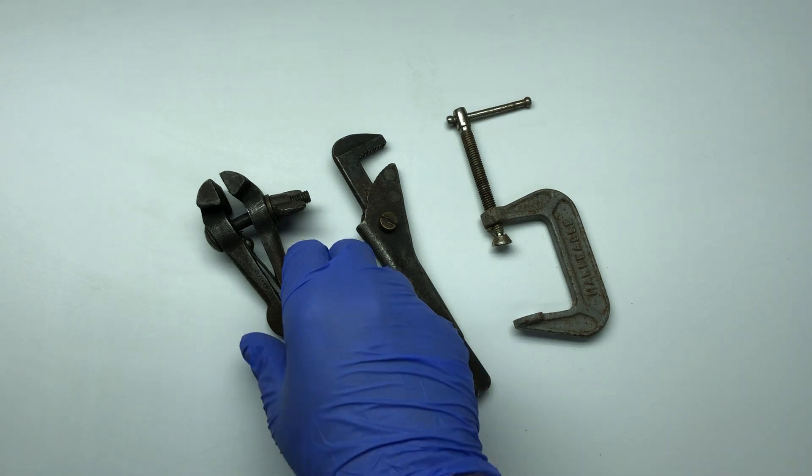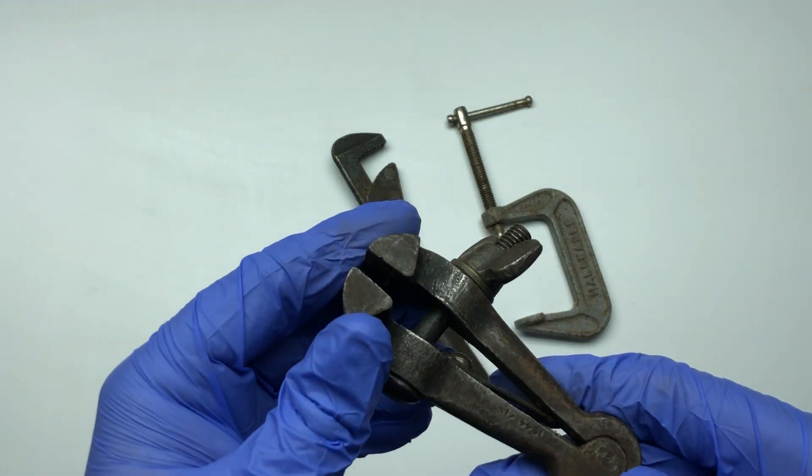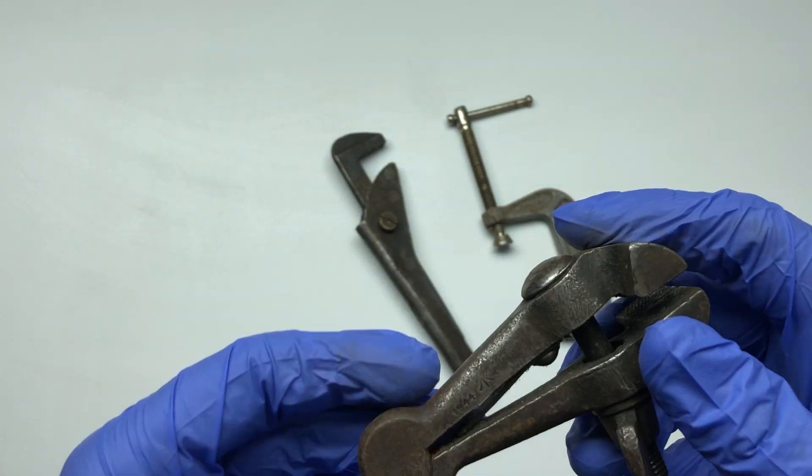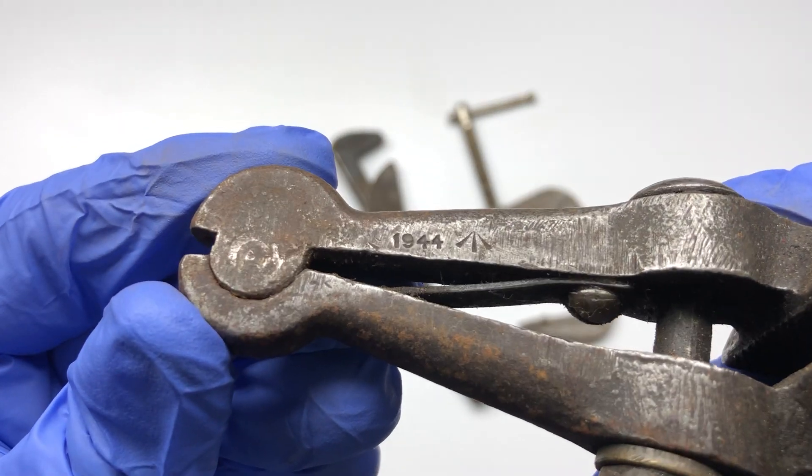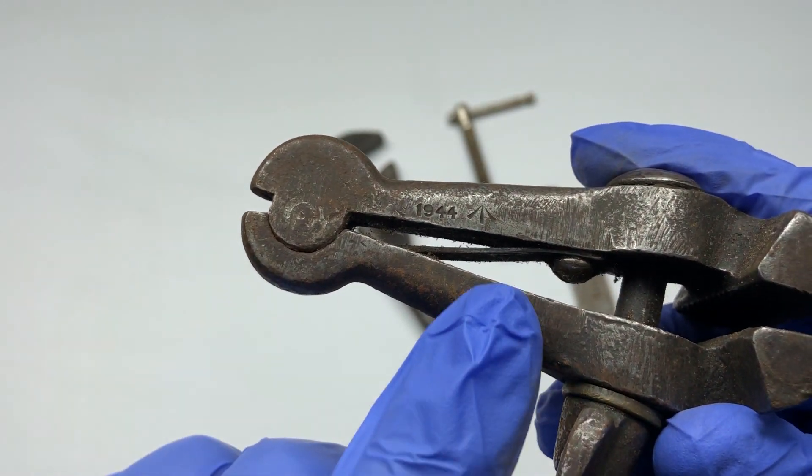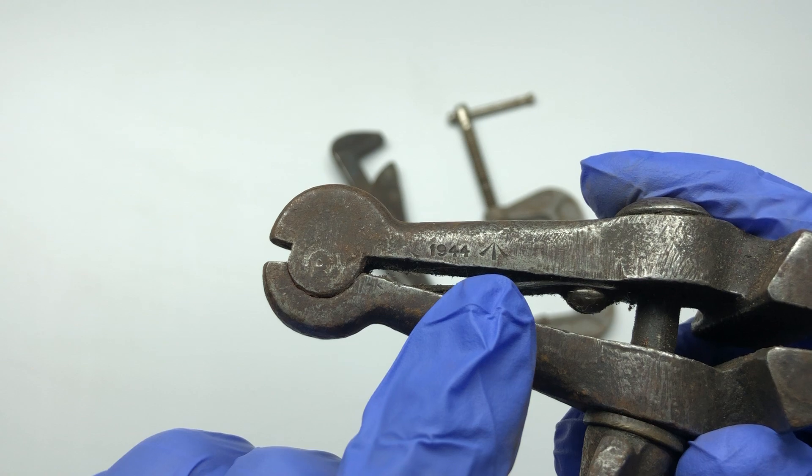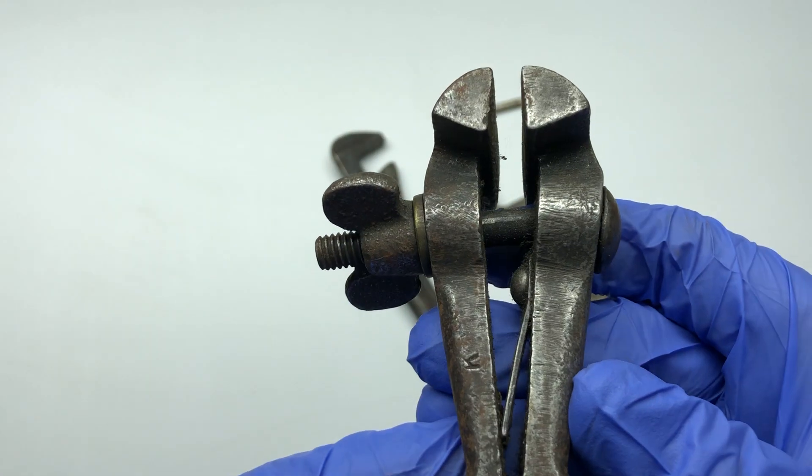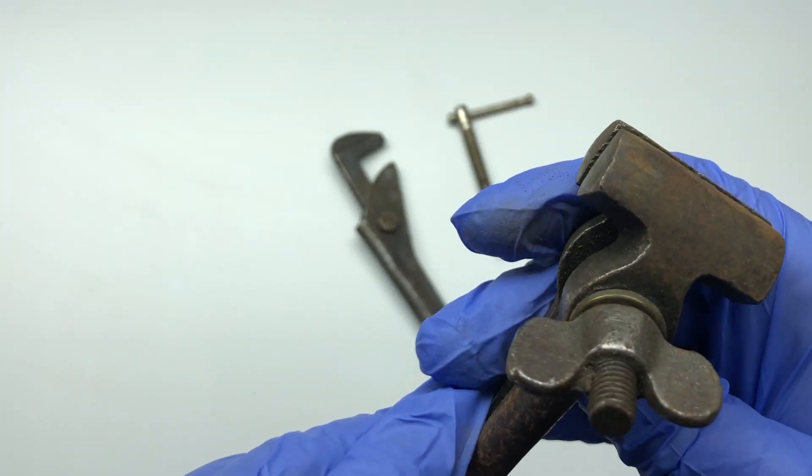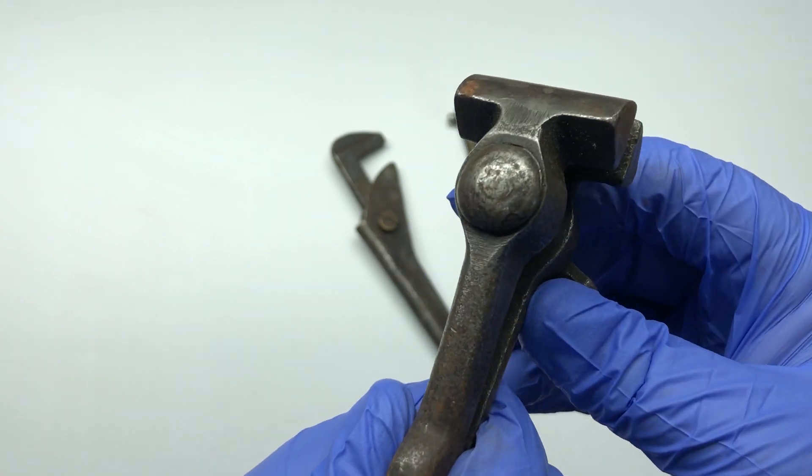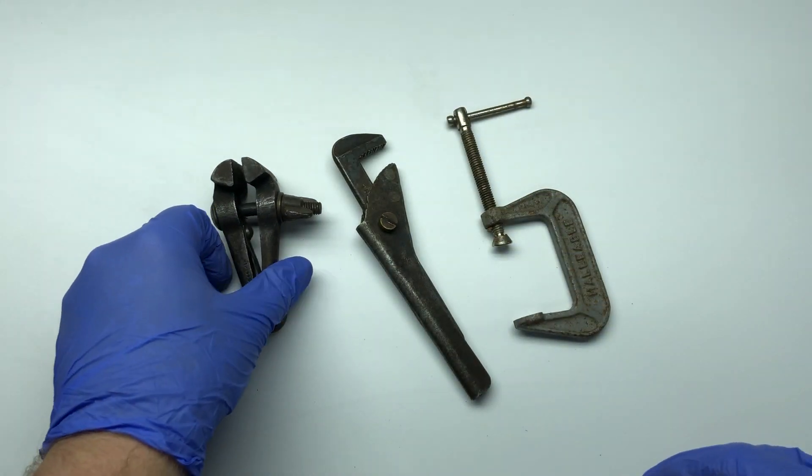Anyway, so the first thing I bought when I walked in, the first stall literally, I bought this hand vise and it says here 1944 with an arrow so I think that means it's made for the military. I bought one last week for the same sort of money so I just thought why not.